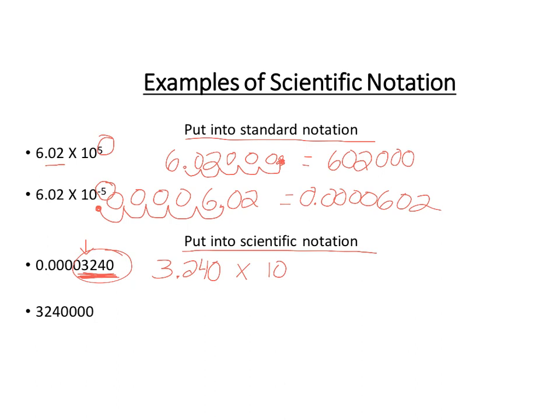Now, how many times do I have to move the decimal to get it to look like that coefficient? So 1, 2, 3, 4, 5. And because this beginning number was smaller than 1, a very small number, it's a negative 5 because negative means it was small. So there's your answer in scientific notation.